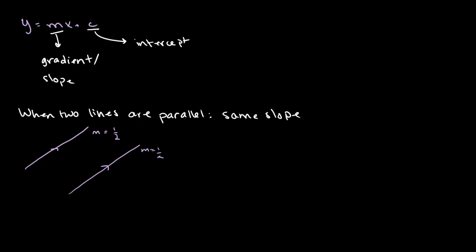However, if there is a line that has a slope of m equals 1/3, then this one is not parallel to the other two. So, parallel lines have the same slope or same gradient.